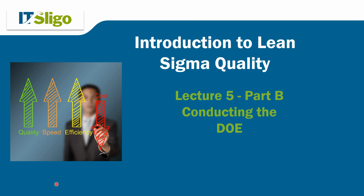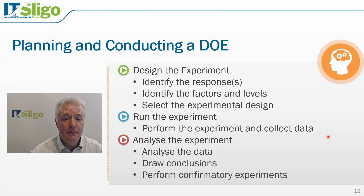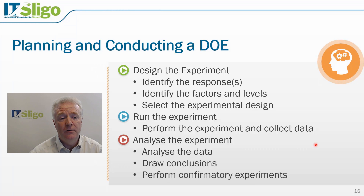Welcome to lecture 5 part B. In this section we will look at the aspects we need to take into consideration when conducting the experimental design. We're going to identify how we will design our experiment by means of identifying our responses, factors and levels. We will then look at how we will run the experiment and collect the data, and finally identify how we will analyze the experimental data, draw conclusions and perform confirmatory experiments.